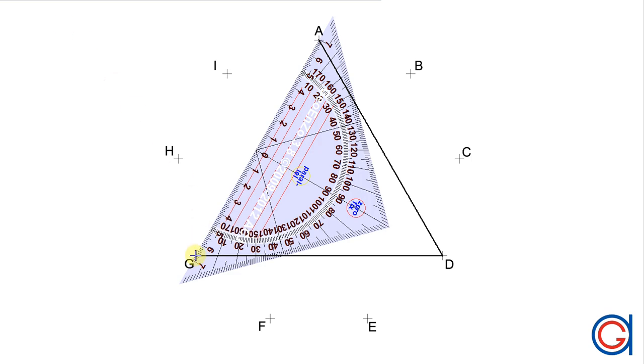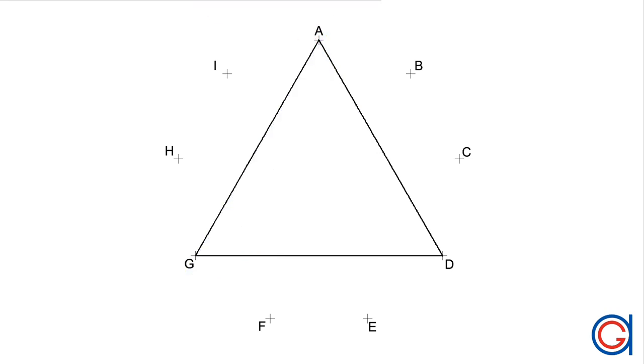Continuing we join vertex G to vertex A again skipping vertices H and I. Here you can see that we need to lift the pencil in order to complete the star.